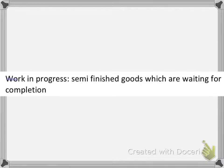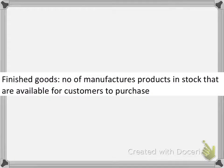The second type of inventory is work in progress. Work in progress refers to semi-finished goods which are waiting for completion — they have not yet been fully made but are almost finished. The third type of inventory is finished goods. Finished goods are the manufactured products which are in stock and available for customers to purchase.